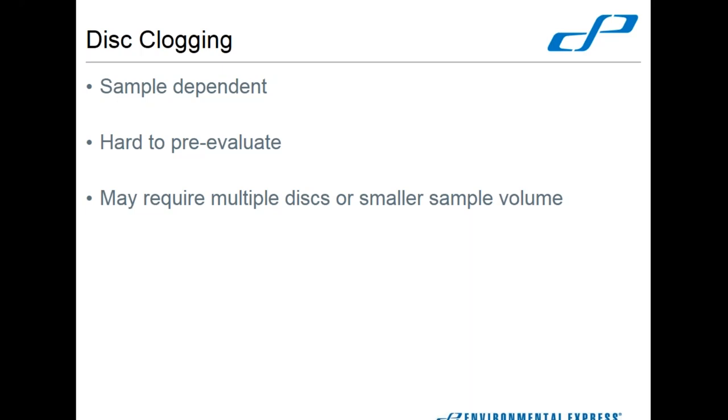You do have the option of collecting a smaller volume of sample. Just remember that if you do collect a smaller volume, you must run your QC, your batch QC, at that same volume. You can't have different volumes of sample from different samples run in the same batch. If you collect one sample at 250 mils and all the rest at one liter, you will have to have two different batches. That will have to be something you evaluate based on your samples.